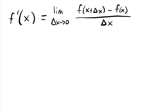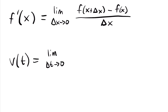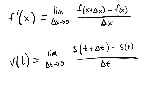Just as we derived the limit definition of a derivative for the tangent line problem, we can come up with a similar definition for the instantaneous velocity. The velocity function with respect to t equals the limit as delta t approaches zero of s(t plus delta t) minus s(t), all divided by delta t. This is the same formula used for slope, applied to velocity — it is the derivative of the position function.